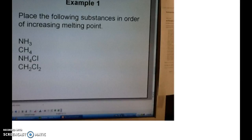Here's an example of a problem where it says you have to place the following substances in order of increasing melting point. As I said earlier, the first thing I would do is draw the Lewis structure of all of these compounds and try to categorize what kind of interactions exist in each of these molecules or ionic compounds.